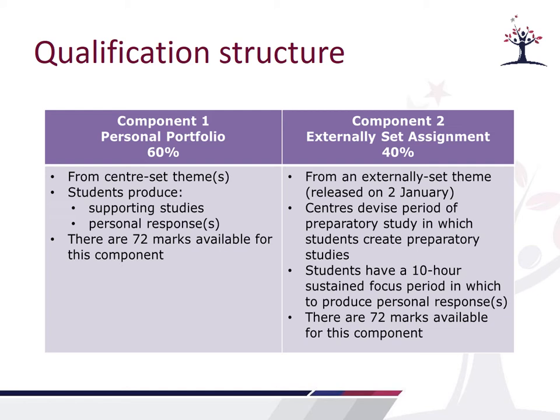Component one is worth 60% of the GCSE grade and the externally set assignment is 40%. At the end of the ESA, there is a period of sustained focus exam, which is an opportunity for students to produce a piece of artwork supervised in exam conditions. There is no written exam in art.